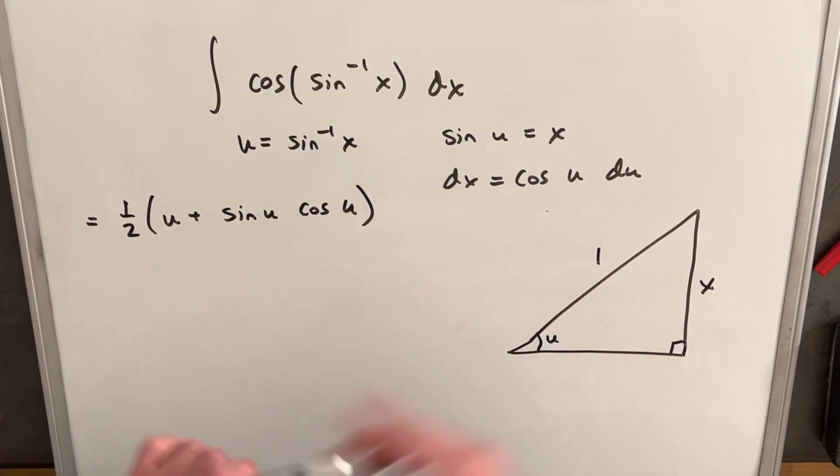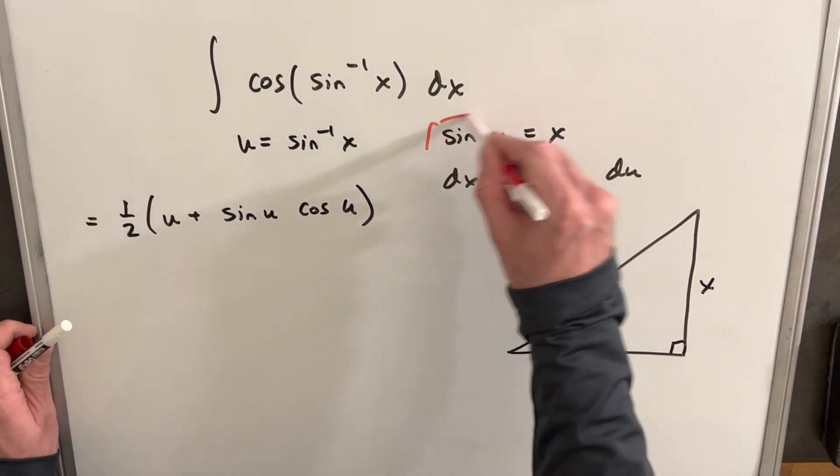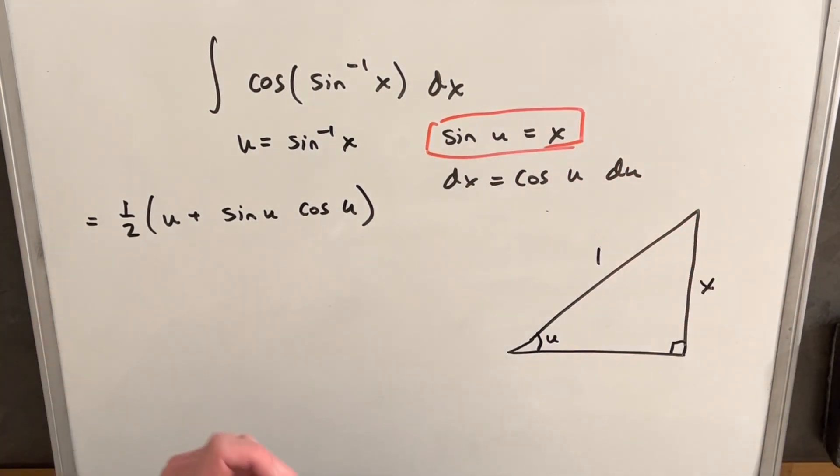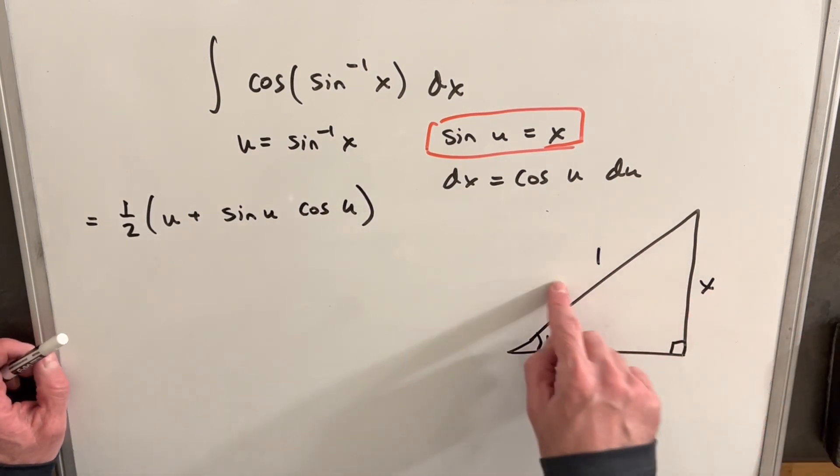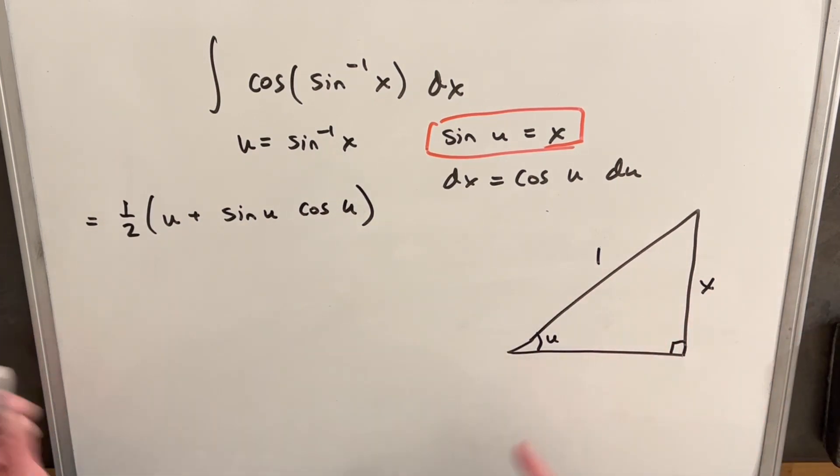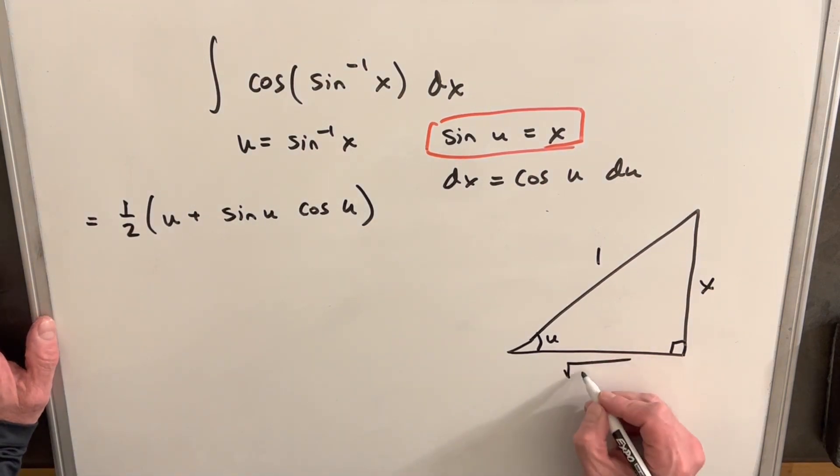I've drawn our right triangle here based on this piece right here, which tells us if we have a triangle with the angle u, our sine is going to be opposite over adjacent, x over 1. So we just need to find this other side. So using the Pythagorean theorem, we find that this side is going to be 1 minus x squared.